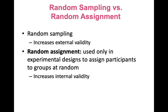It's important not to confuse random sampling with random assignment. With random sampling, we create a sample using some random method so that each member of the population of interest has an equal chance of being in the sample — this increases external validity. With random assignment, typically used in experiments, participants are randomly put into different groups, usually a treatment and a comparison group — and this increases internal validity. So random sampling is associated with external validity, and random assignment is associated with internal validity.